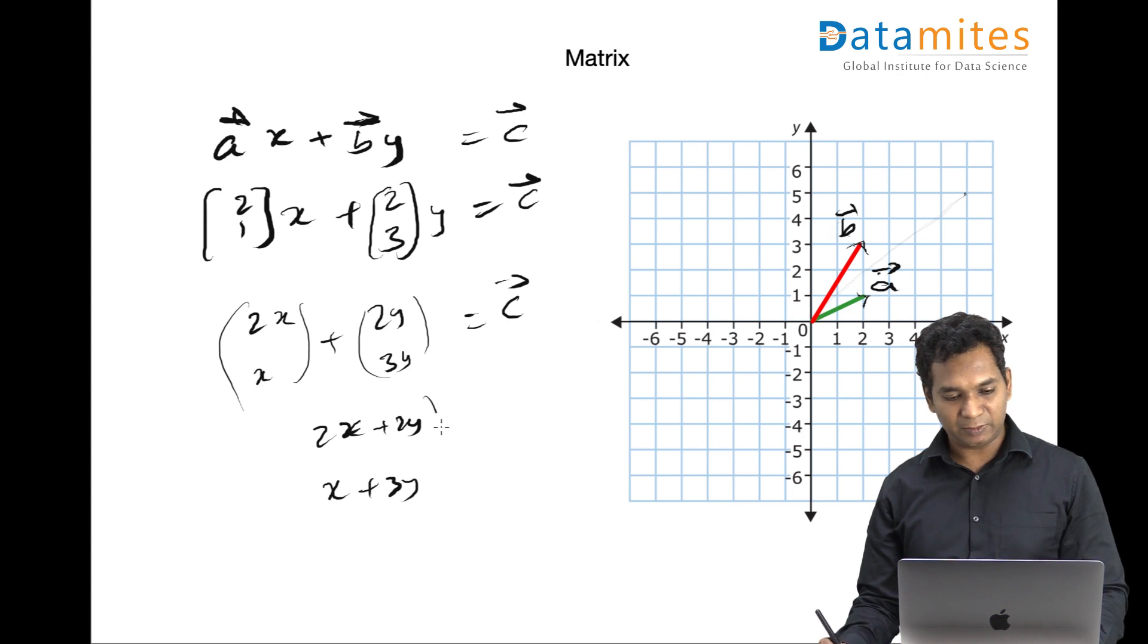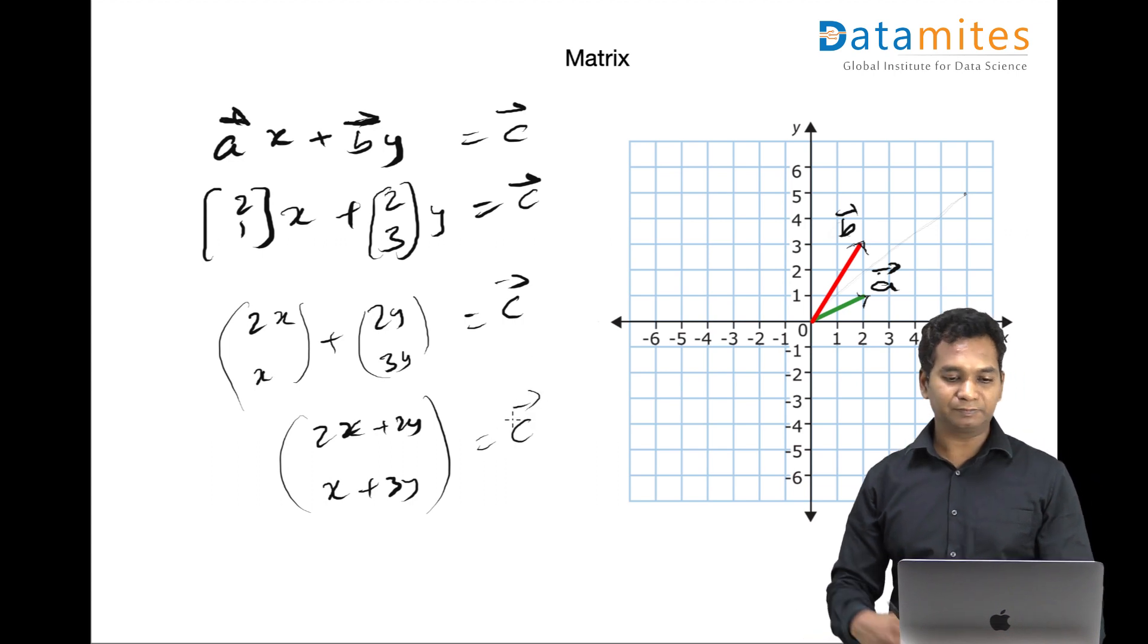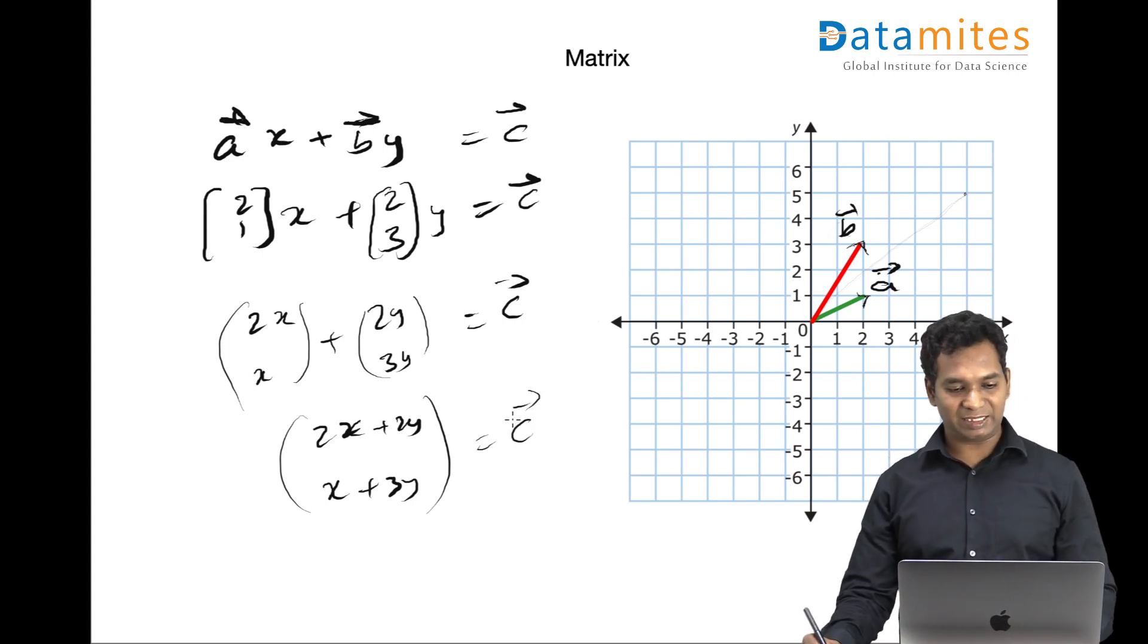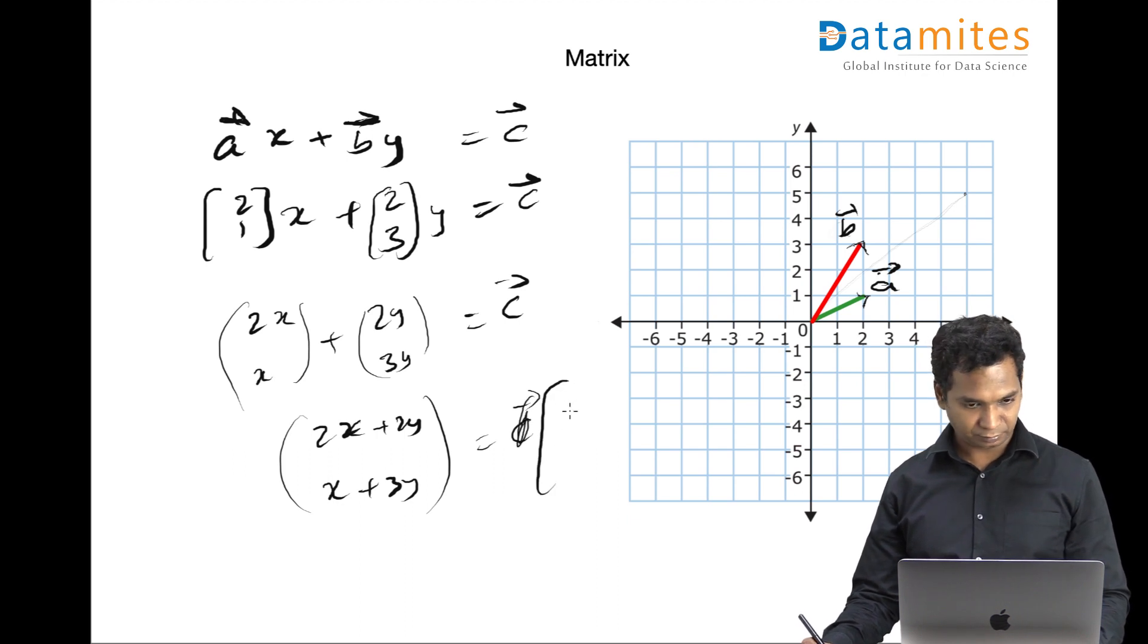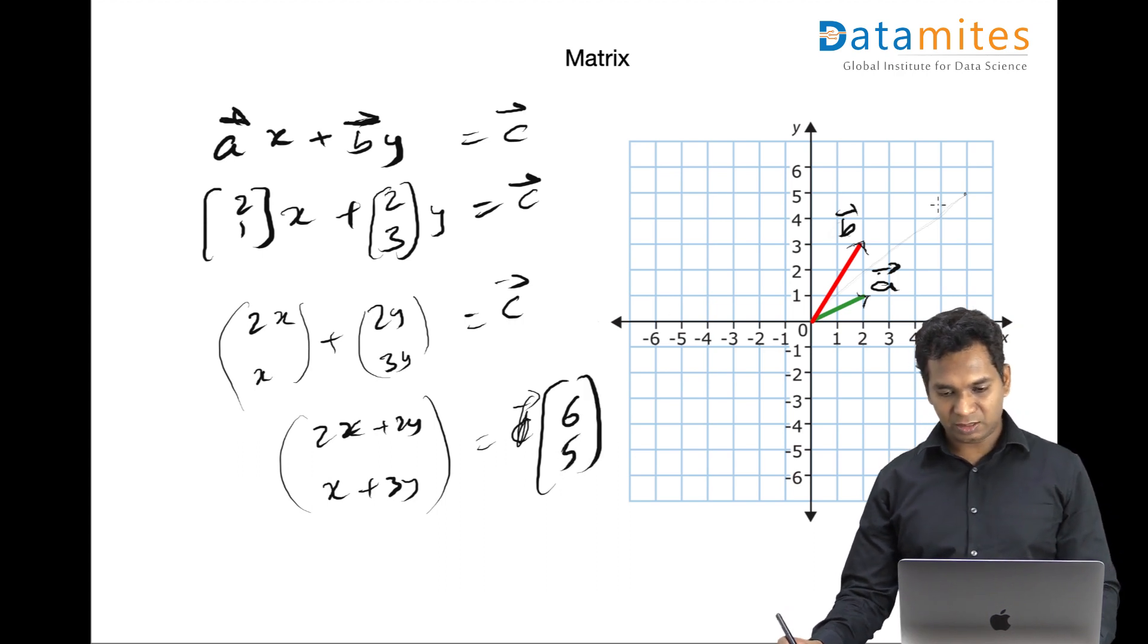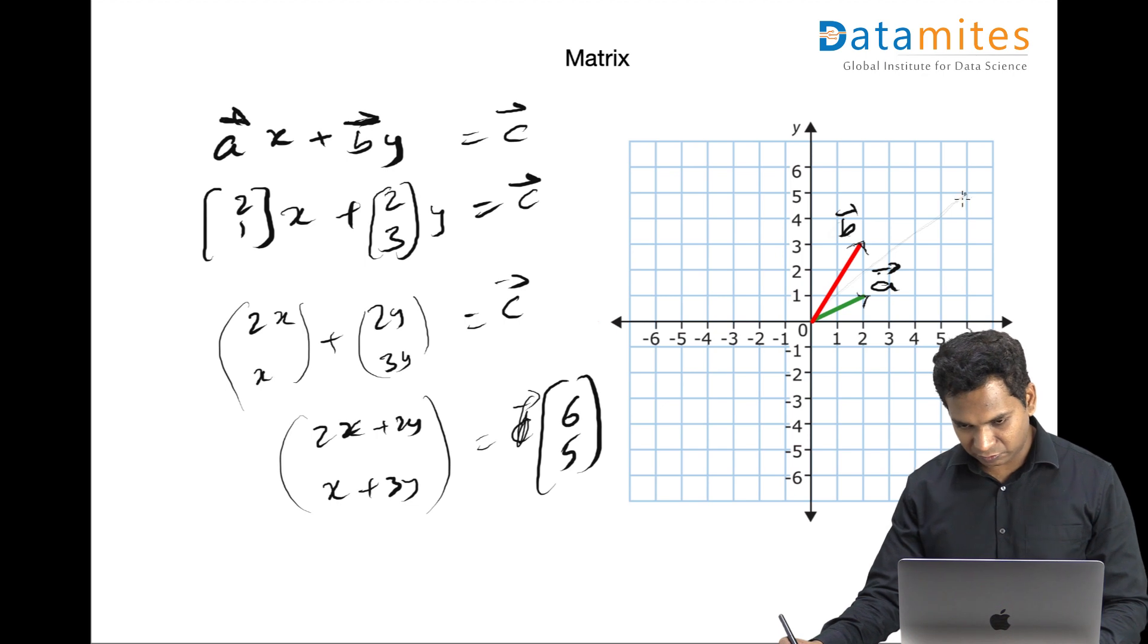That becomes your c. In this case I don't know c here. Let's say that c is something like (6, 5), so this 6 and 5, this is your c vector.